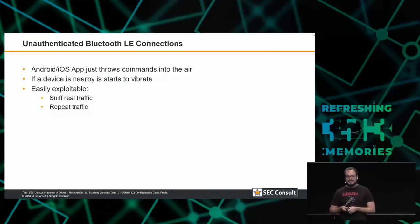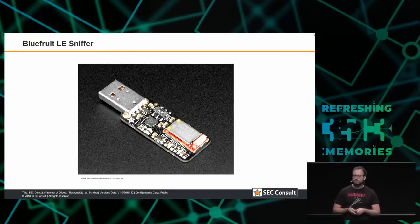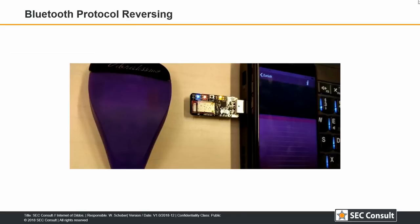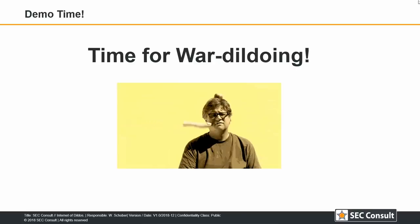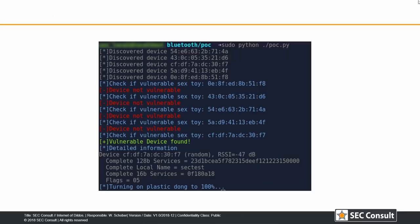That is of course easily exploitable — you can sniff the real traffic and replay it. I did exactly that using a Bluetooth Low Energy sniffer called the BlueFruit device. I placed it between the sex toy and the smartphone app and sniffed traffic using Wireshark. I found interesting handles: the 0x1F handle, which is an initialization handle, and handle 0x25, where you can send values from 0x00 to 0xFF to set the vibration intensity. I wrote a small Python proof of concept — a 'war-dildering' script — which scans the air for Bluetooth Low Energy devices, tries to determine if it's a sex toy, and if yes, turns it on to FF, which is 200%.